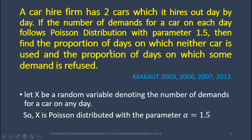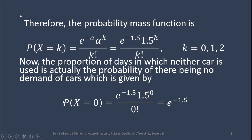The first question asks for the proportion of days on which neither car is used, that means the demand is 0. The second question asks for the proportion of days on which some demand is refused, that means the demand is greater than 2. So we have to find P(x = 0) and P(x > 2). We know the PMF of Poisson Distribution: P(x = k) = e^(−α) × α^k / k!. With alpha = 1.5, putting k = 0 and substituting into the PMF gives us the result for the first part.